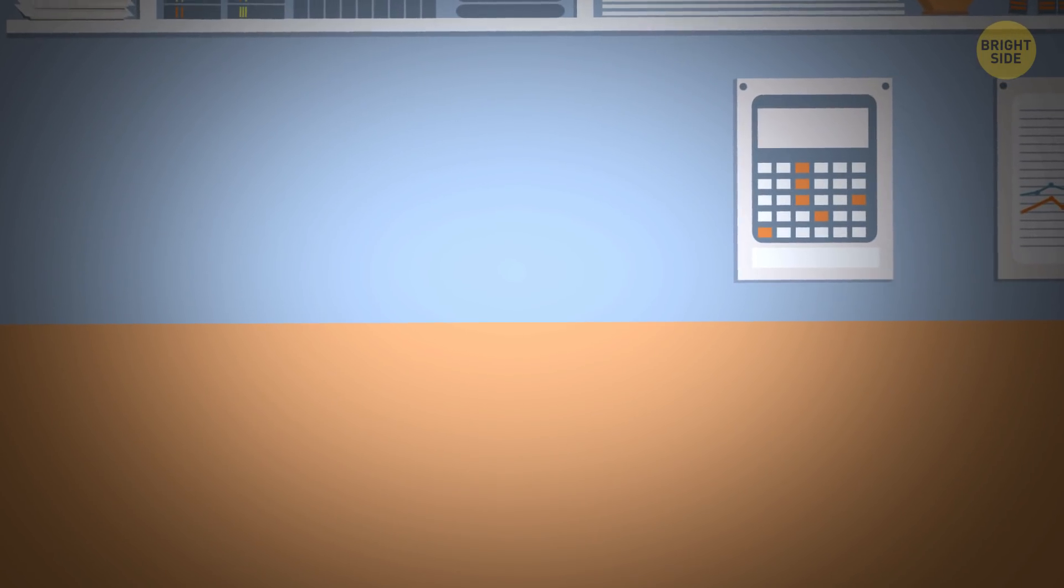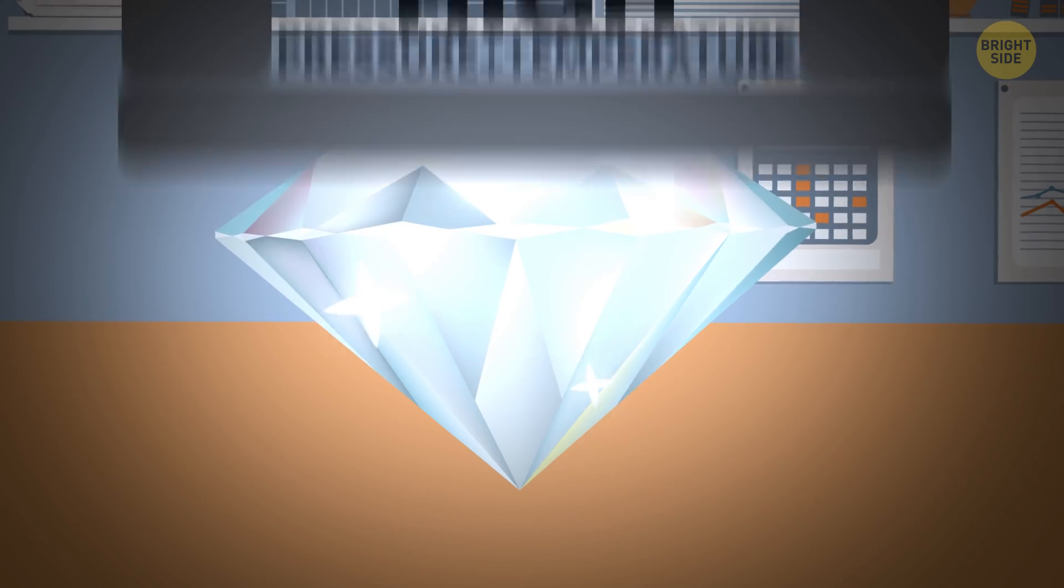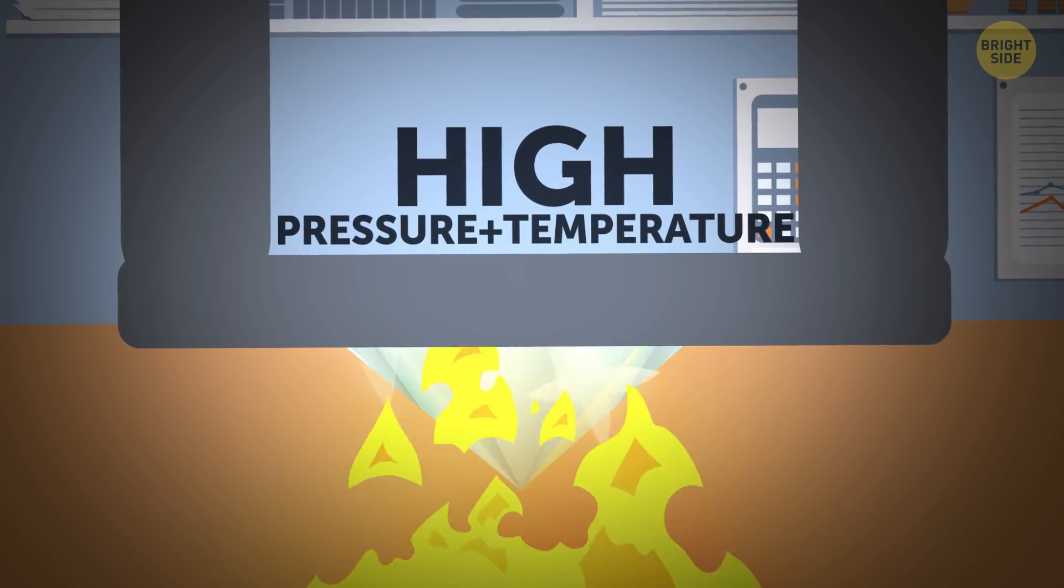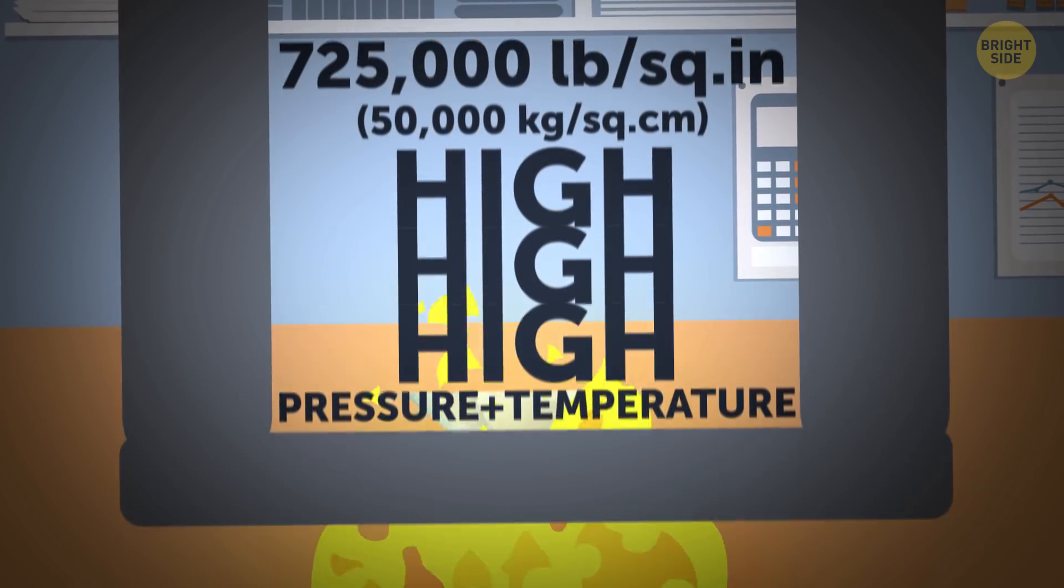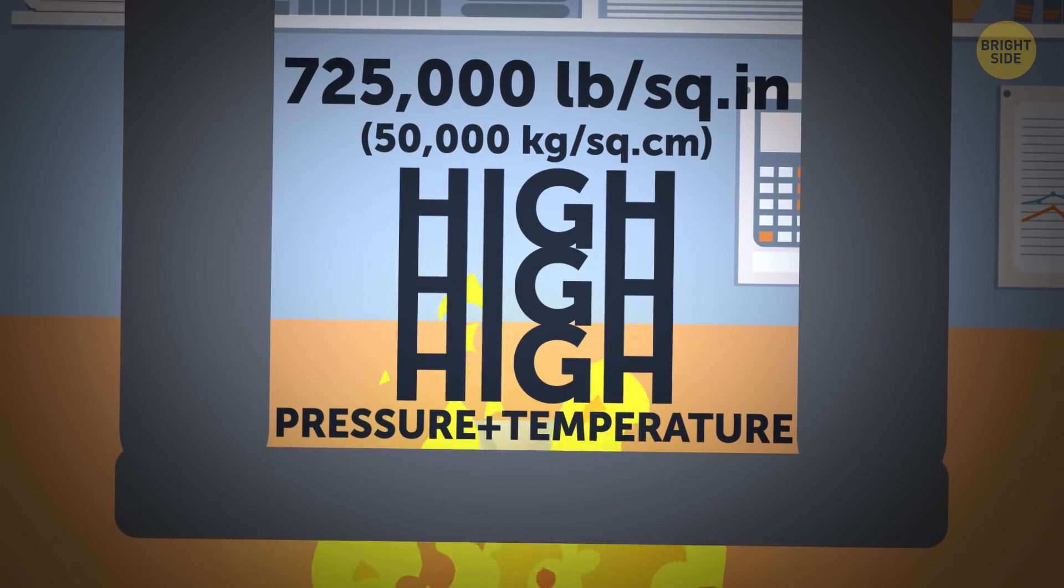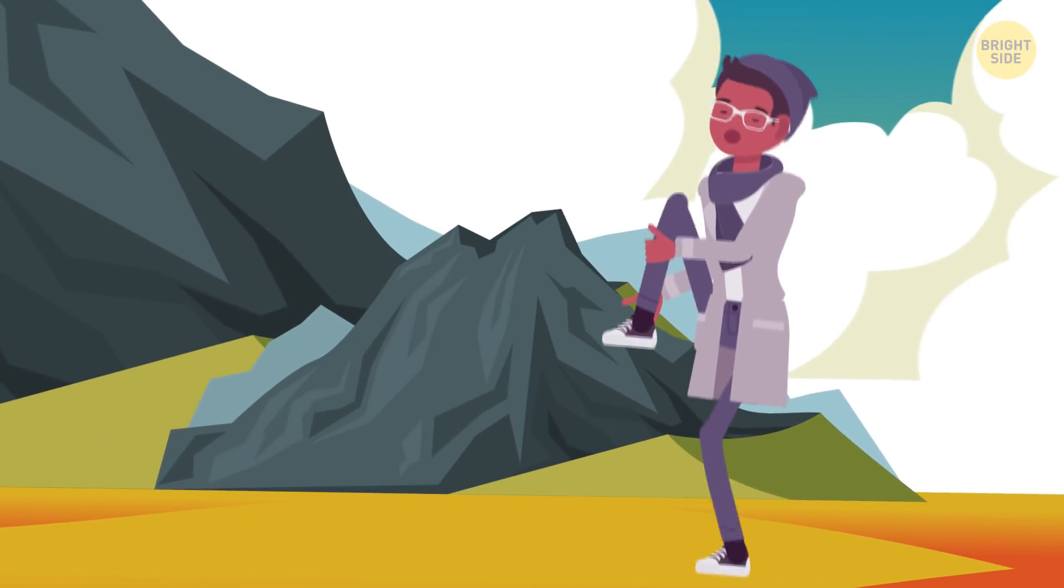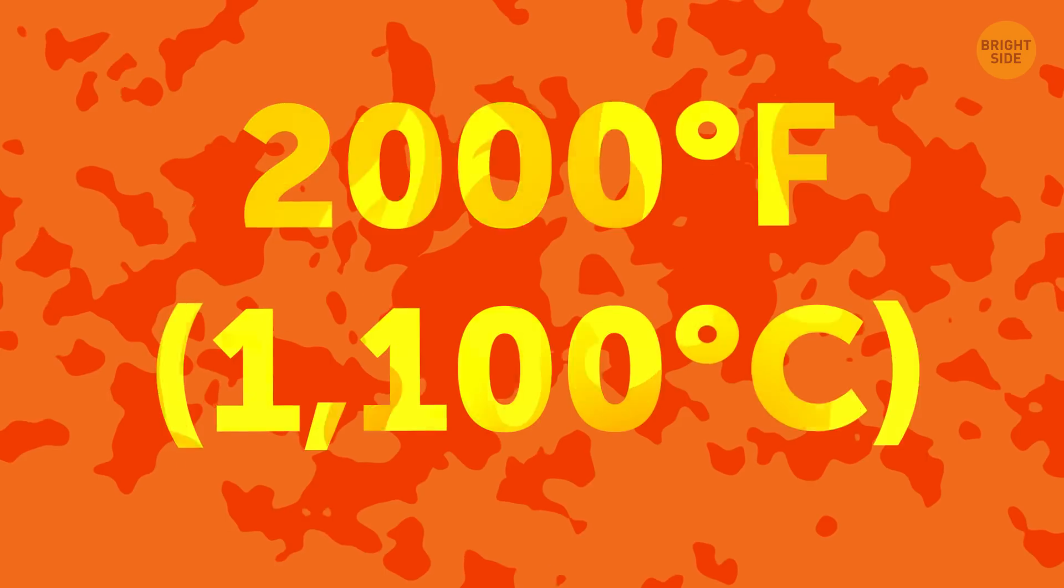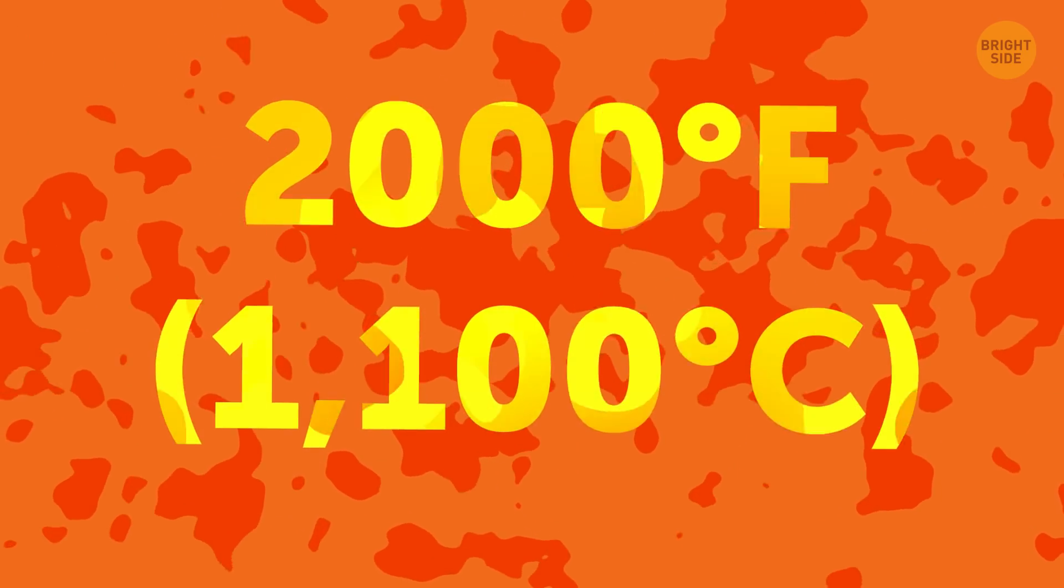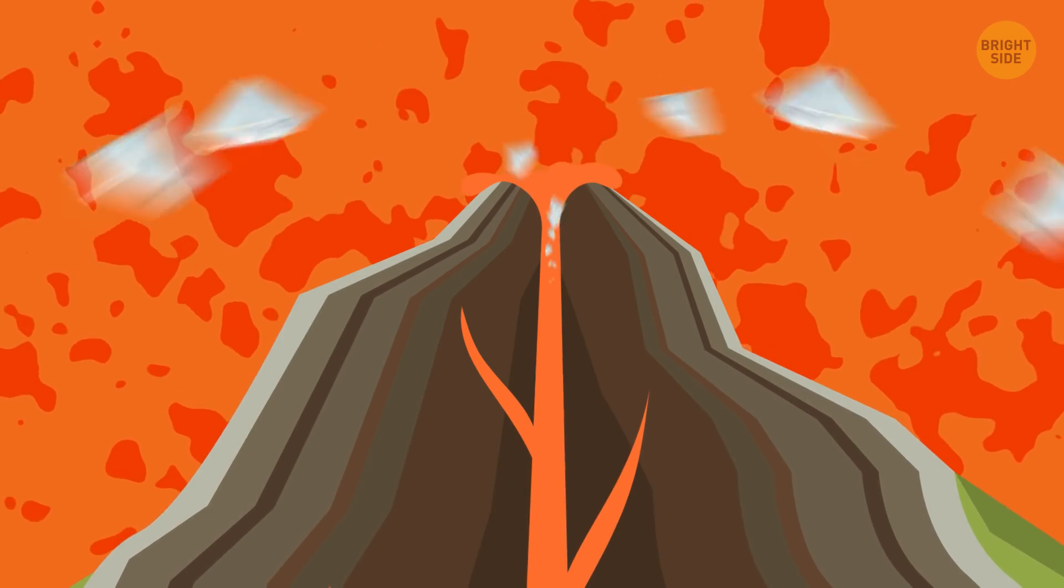In a lab, they make diamonds using something called HPHT. That stands for High Pressure, High Temperature. And high is an understatement. The pressure they use is 725,000 pounds per square inch. Woah! It'd be like having a mountain drop on your foot. Ow! As for the temperature, does 2000 degrees sound high enough to warrant that H in HT? And yeah, that's as hot as lava. Which makes sense. Diamonds come from volcanoes, right?